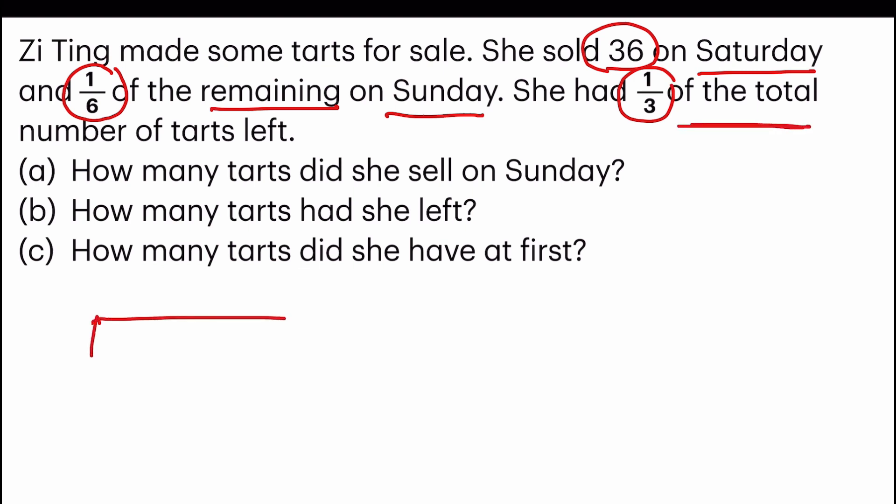So let us start by drawing a bar model. And over here, this represents Saturday, which was the 36 tarts that were sold. And then now we are going to go into one-sixth of the remaining. So these are the remaining from here to here.